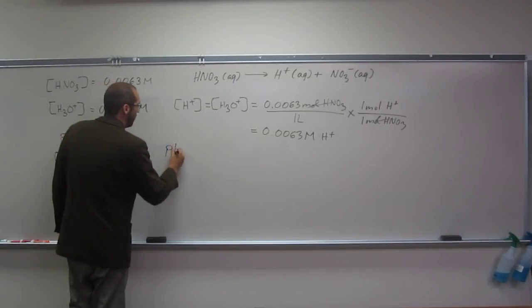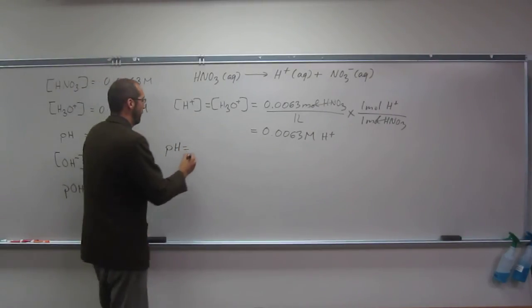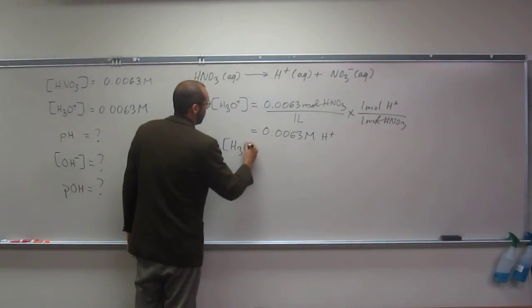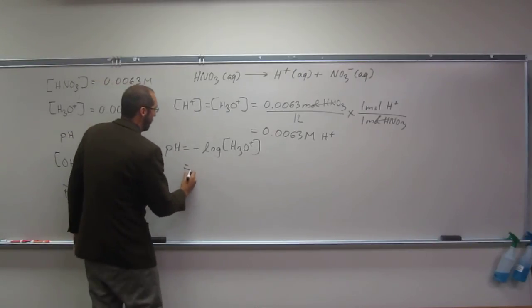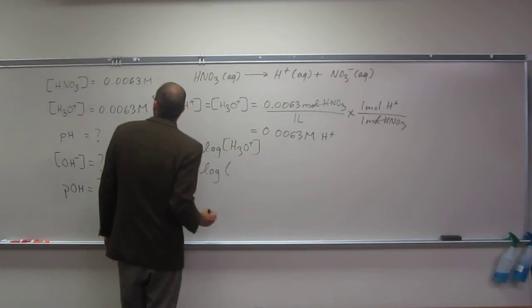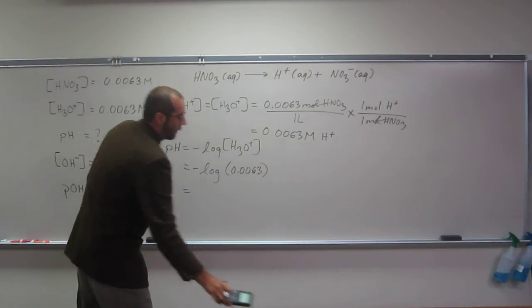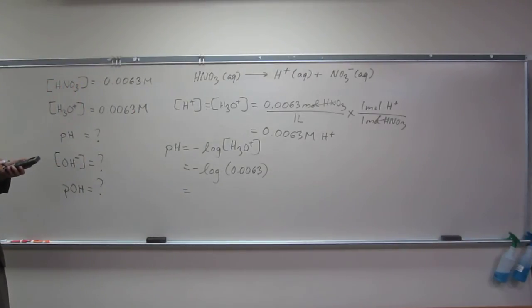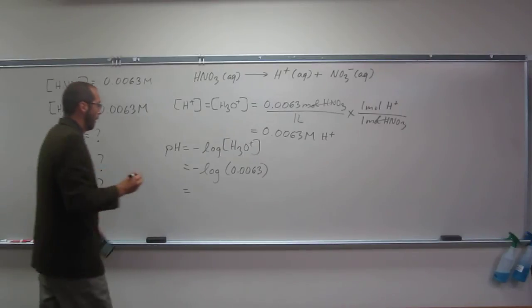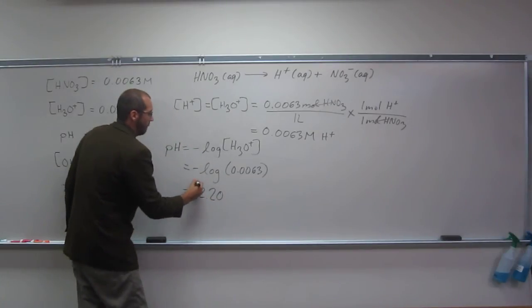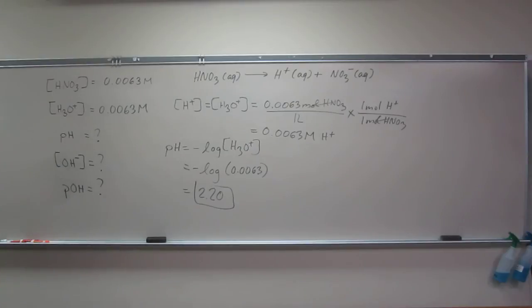Let's do the pH now. pH equals what? Negative log of the what? Yeah, the concentration of hydronium. So, we have the concentration of hydronium. So, two sig figs, so we're going to put three here, 2.02 is the pH. Remember unitless. Is everybody okay to this point? Yes.